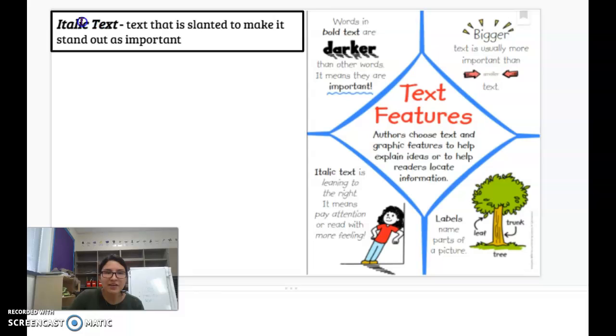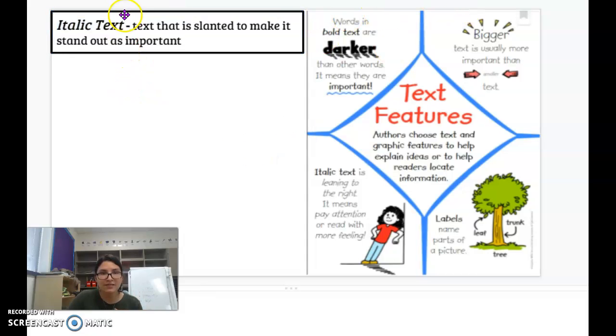So right here, I want to actually show you my example. This is not only an example of italic text. Do you see how it's slanted to the right? Watch, I can make it unitalic. Italic. And then it's also bold text, meaning it stands out. See how it's darker? Then if I don't want it to be darker, see? Different examples. Then if I want it to be bigger, do you see the difference? So I just wanted to show you that little example of bold text, bigger text, and italic text.